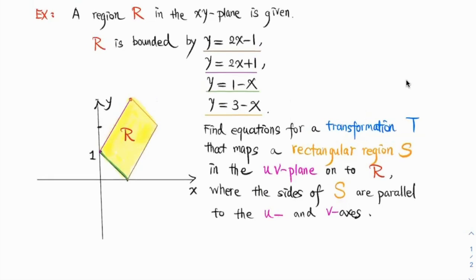We're trying to find equations for transformation T that maps a rectangular region S in the UV plane onto this region R in the XY plane.